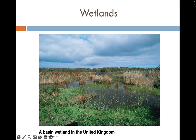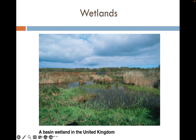Michigan has three different types of wetlands: cattail marshes, which are the most common; bogs, which are floating moss-based ecosystems over small but deep lakes with acidic water; and fens, which look like small lakes with grasses and reeds on the sides, but with alkaline or basic water.